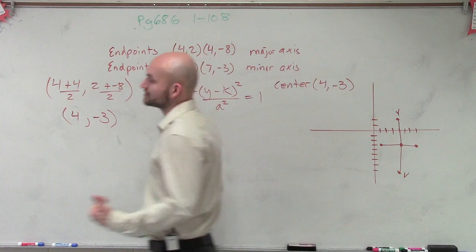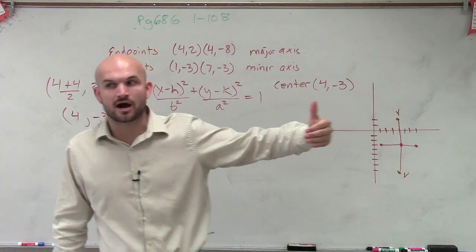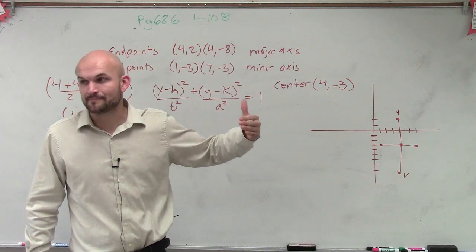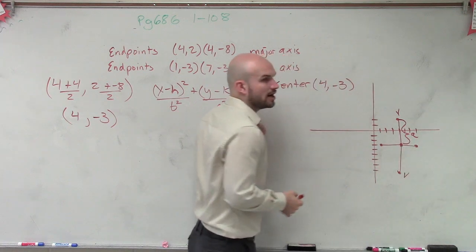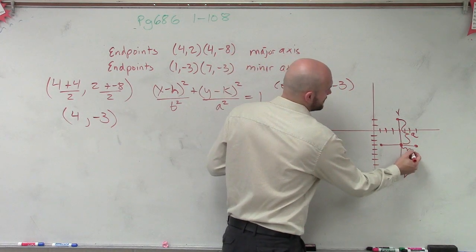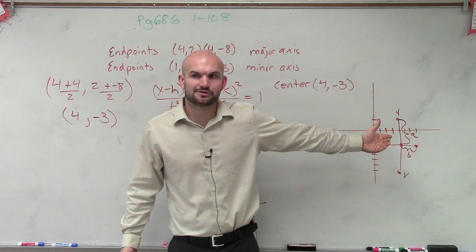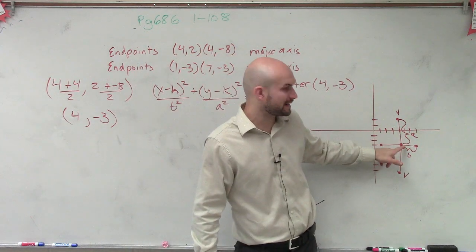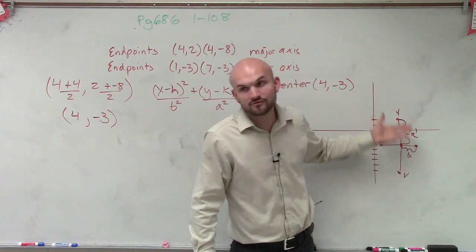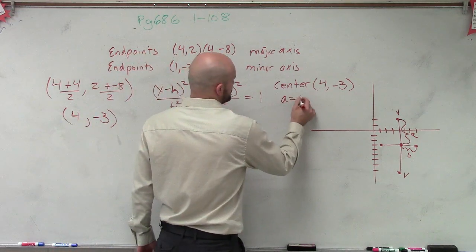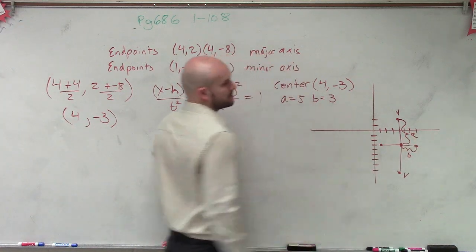So there's our center at (4,-3). Now the next thing, to write the equation, we need to find our value for A and our value for B. We're not concerned about where our focus or foci are, or C. We're just concerned about A and B. Remember A is your distance from your vertice to your center, and B is your distance from your center to your co-vertice. So I can just look at this and say, to go from my vertice to my center, I had to travel 1, 2, 3, 4, 5 units. Therefore, I can say A equals 5, and B equals 1, 2, 3.